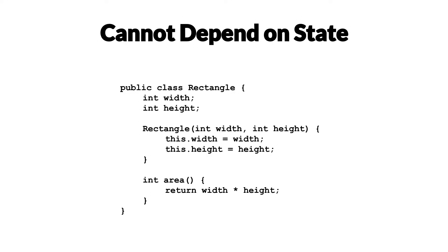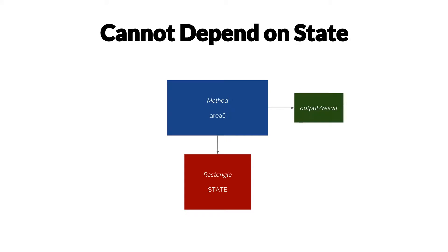Let's take, for example, this class Rectangle here that has two fields, width and height, just a regular constructor, and then it has this method area here that returns an integer — it's going to return width times height. As you can see, this method area here is the opposite of a pure function really. It depends on the instance of Rectangle that it's attached to, so this doesn't even take any input. It only depends on the state of that Rectangle object that you call it against. This method area produces a result or an output, but depends on the state of Rectangle.